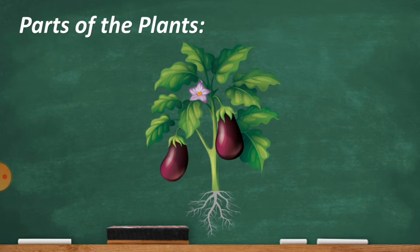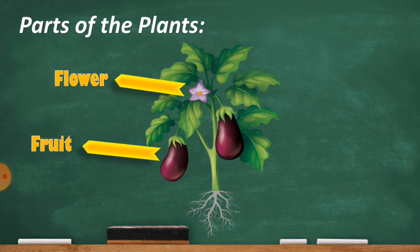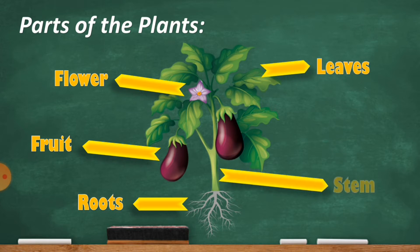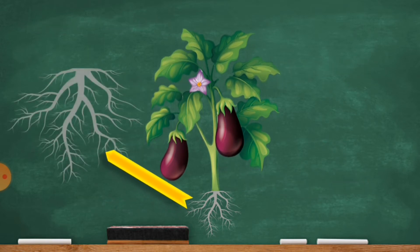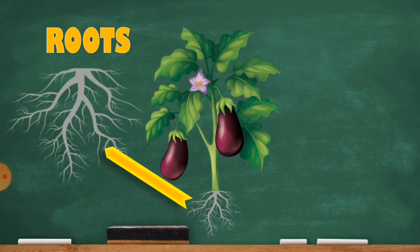Now we will talk about the parts of the plant: the flower, fruit, roots, leaves, and stem. These five parts of the plants are just the basic parts that play a very important role in the plant. Now we will talk about the roots.